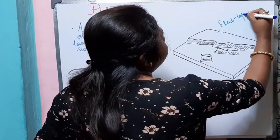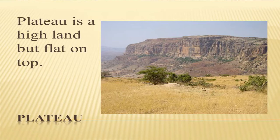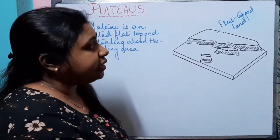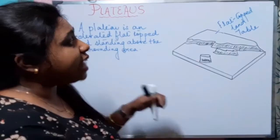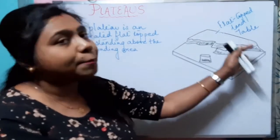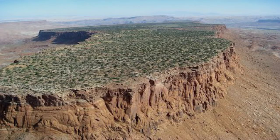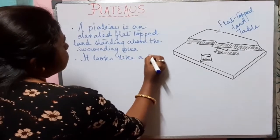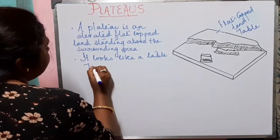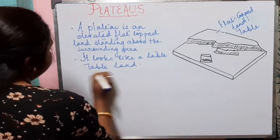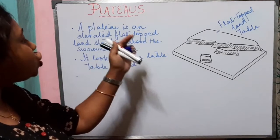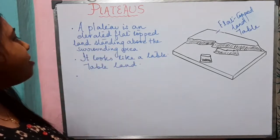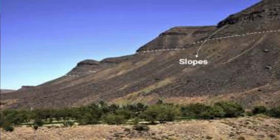The top of the plateau land is flat. Now if you look at the top of the plateau, we can identify that it actually resembles a table. So we can also say that it is a flat-topped table land — plateau looks like a table, so we can call it a table land. So if we define plateau, it is an elevated flat-topped table land standing above the surrounding area.